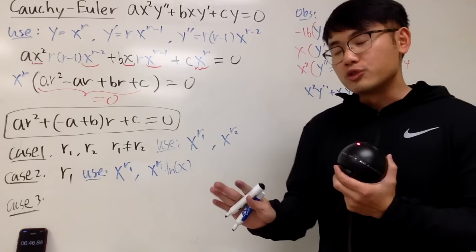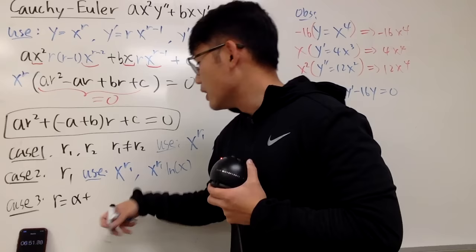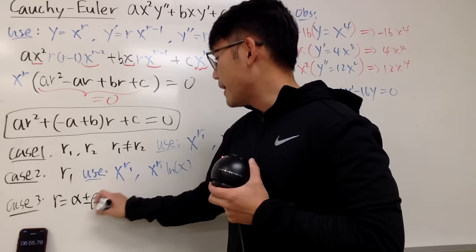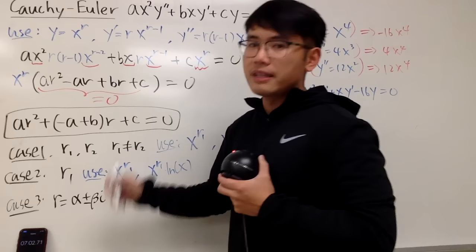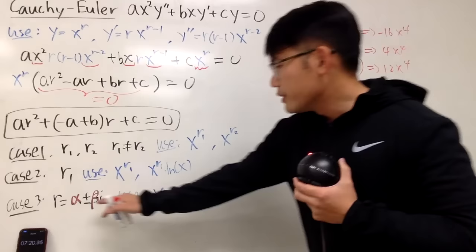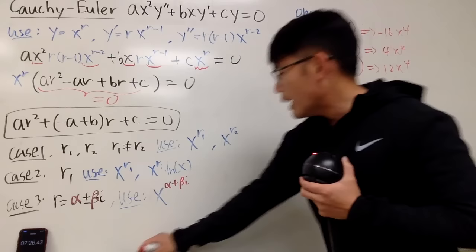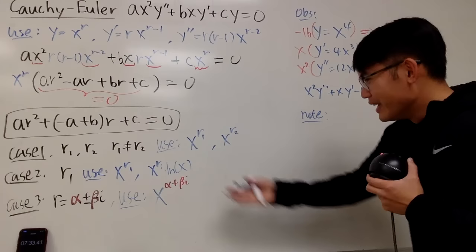Case 3: what if r is complex? Then you have two complex solutions r = α ± βi. I'll prove the building blocks on the side. Consider x^(α + βi) — since we're adding exponents, this equals x^α · x^(βi).